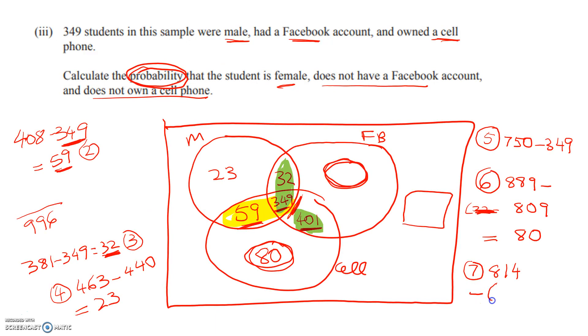That leaves me with 32 people here. Finally, I can add all of those people up and I get the leftover number, which is the females with no Facebook and no cell phone. So there are 20 of them.